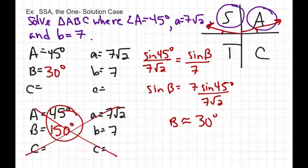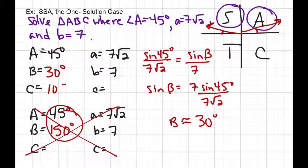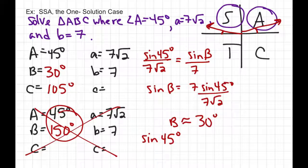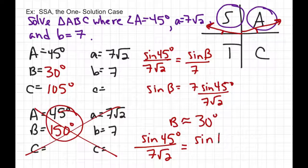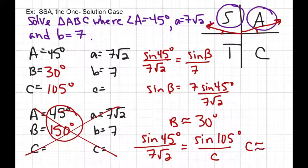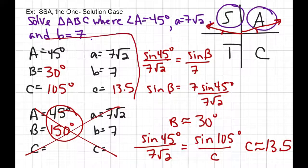Now that angle C is 105 degrees, we use the Law of Sines again: sine of 45 degrees over 7√2 equals sine of 105 degrees over c. Cross-multiplying, we find that c is approximately 13.5. So there was only one solution to this case.